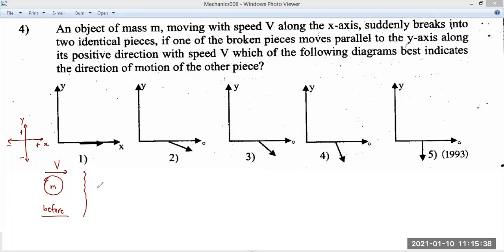And after the collision, one of the pieces, so it's separating into two identical pieces. Therefore, one will be m by 2 and the other one also will be m by 2.